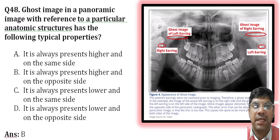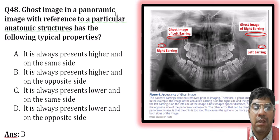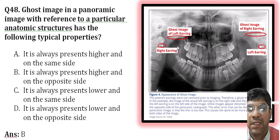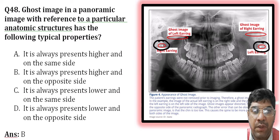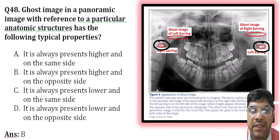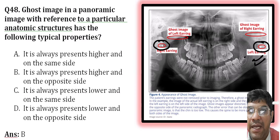Moving to the next question: the ghost image in a panoramic image with reference to particular anatomic structures has the following typical properties. This image represents the ghost image — you can see the right earrings and the left earring. On the panoramic, ghost images appear on the opposite side of their true anatomic location, at a higher level.